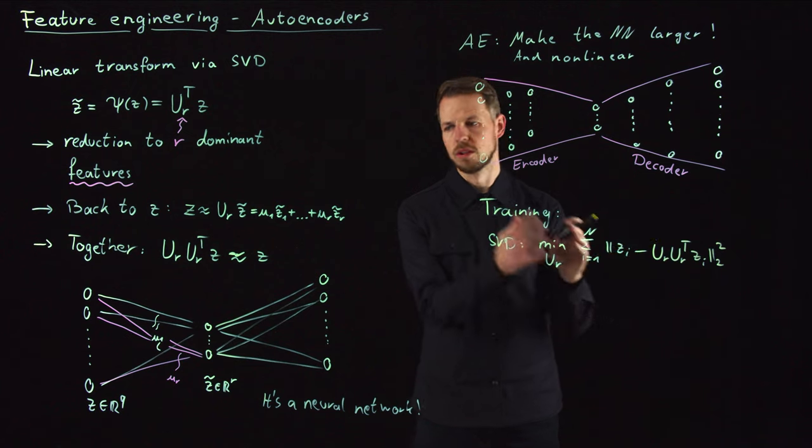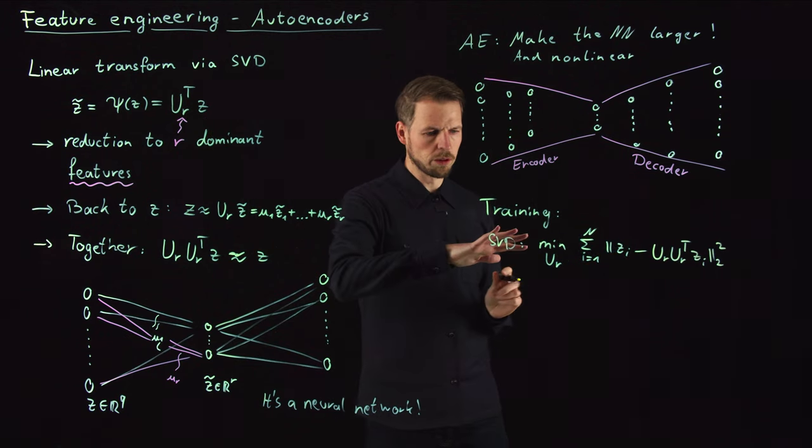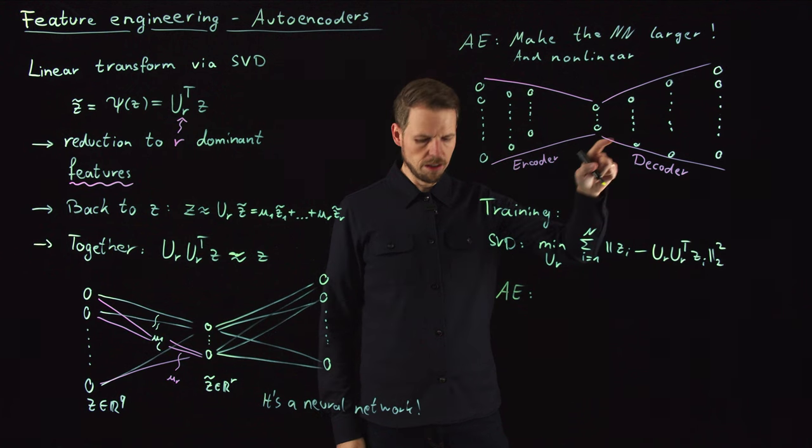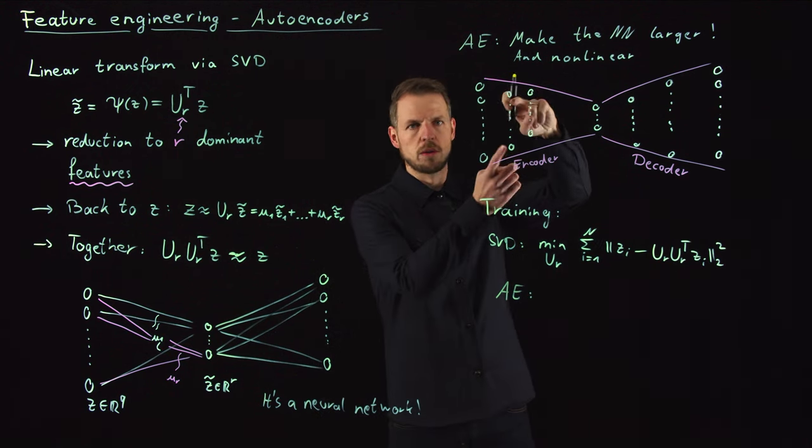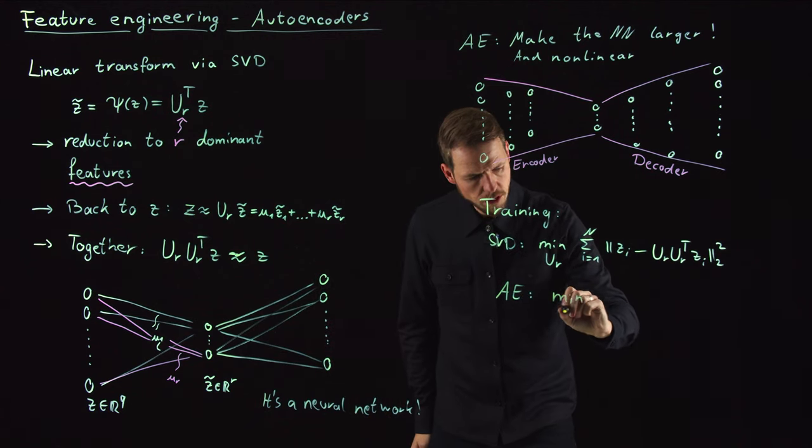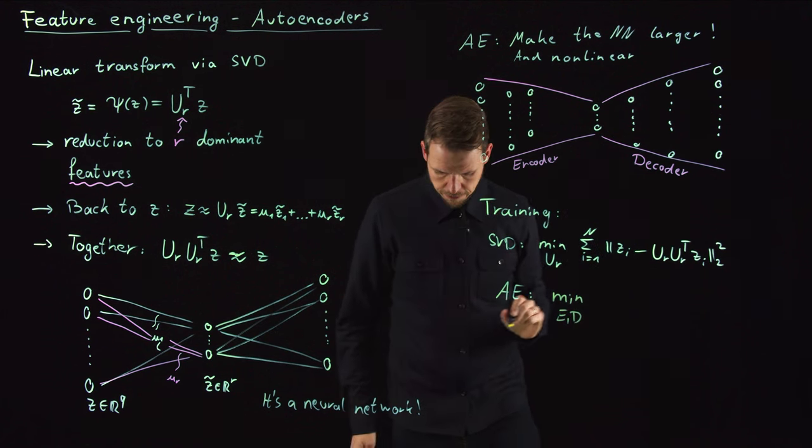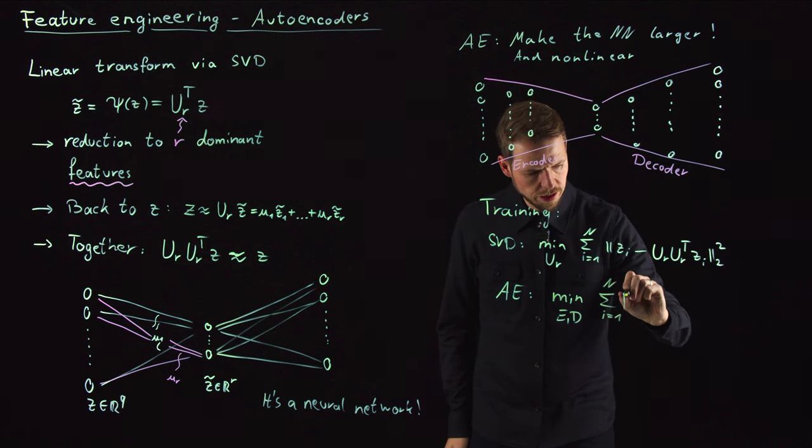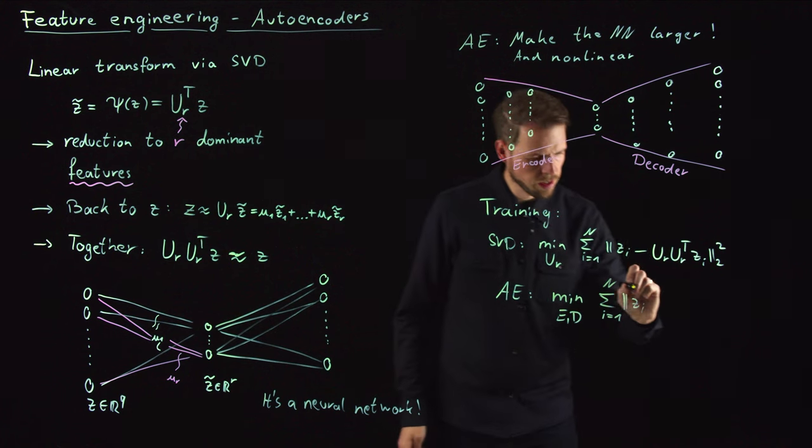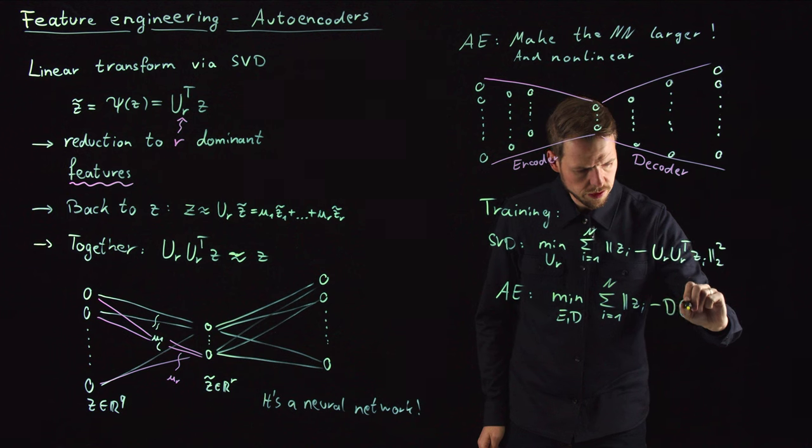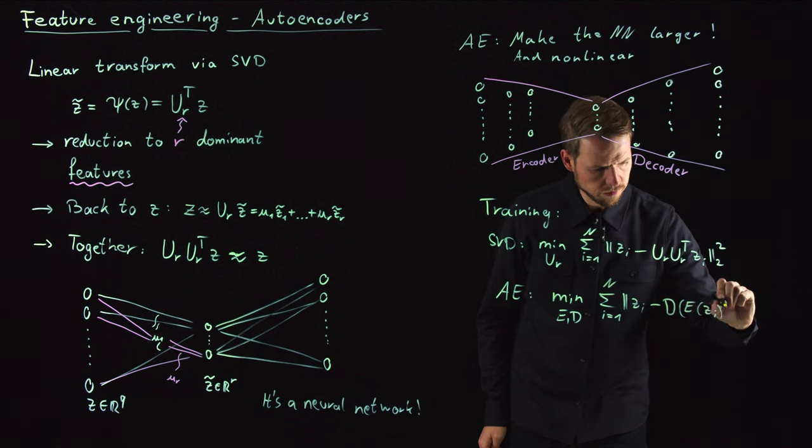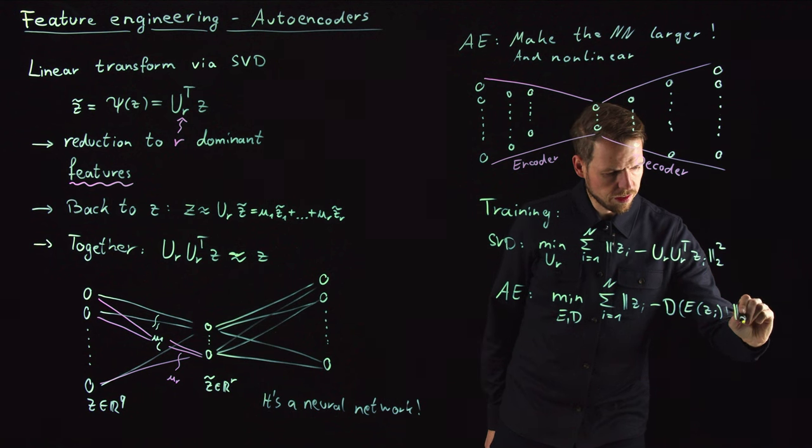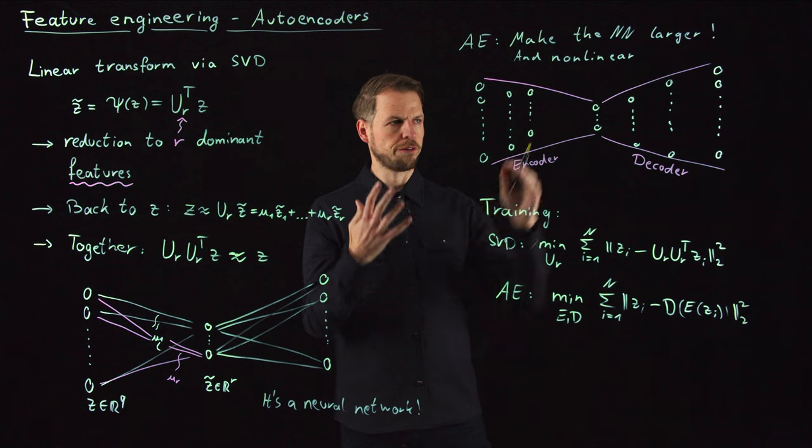minimize the distance between the original input and the compression and going back. We found that the singular vectors really solved this problem. But the same thing can now be done for the autoencoder. What we can do is minimize over the encoder weights E and decoder weights D. Take the sum over all your samples, and then we have the difference between the input and the decoder applied to the encoded input.